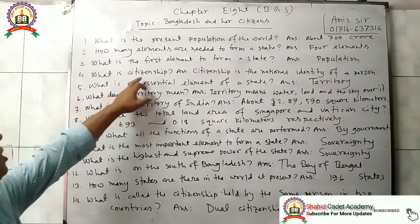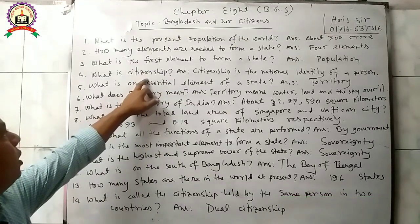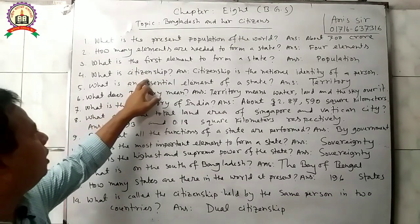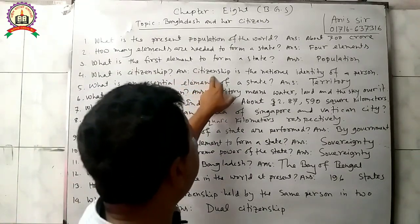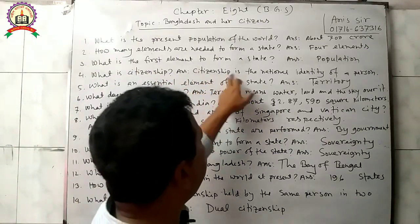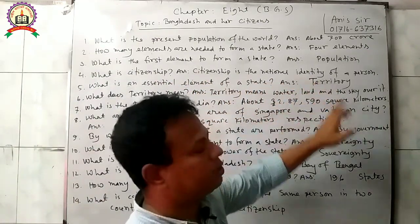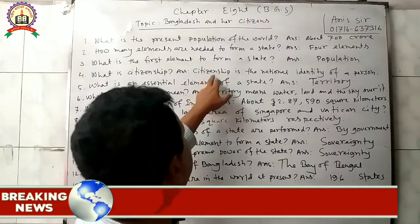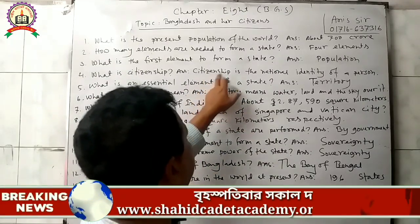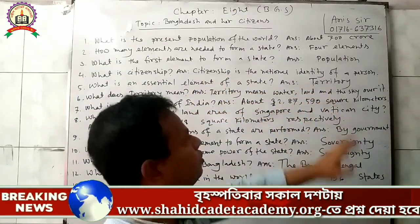Question 4: What is citizenship? Answer: Citizenship is the national identity of a person.